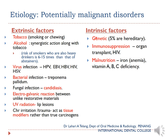The etiology is classified into extrinsic and intrinsic factors. The most common extrinsic factor is tobacco — in the form of smoking, chewing, or both. Alcohol has a synergistic action with tobacco; the risk for smokers who are heavy drinkers is 6 to 15 times that of those with no such habits. Viral infections that can act as initiating factors include HPV, EBV, hepatitis B, HIV, and HSV.